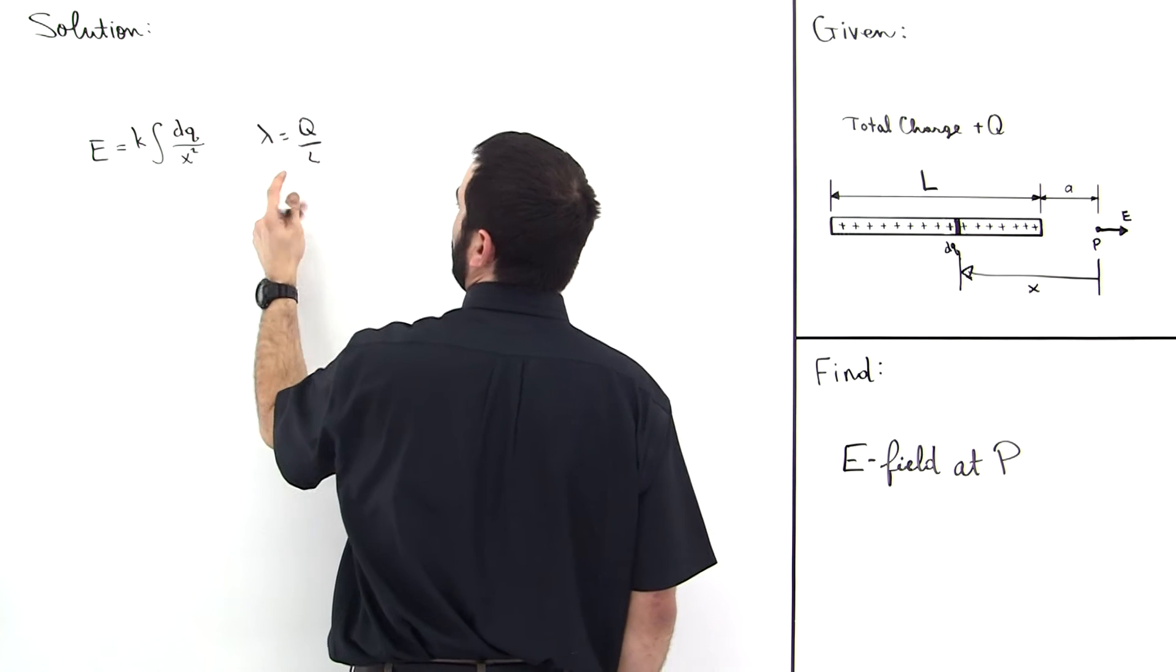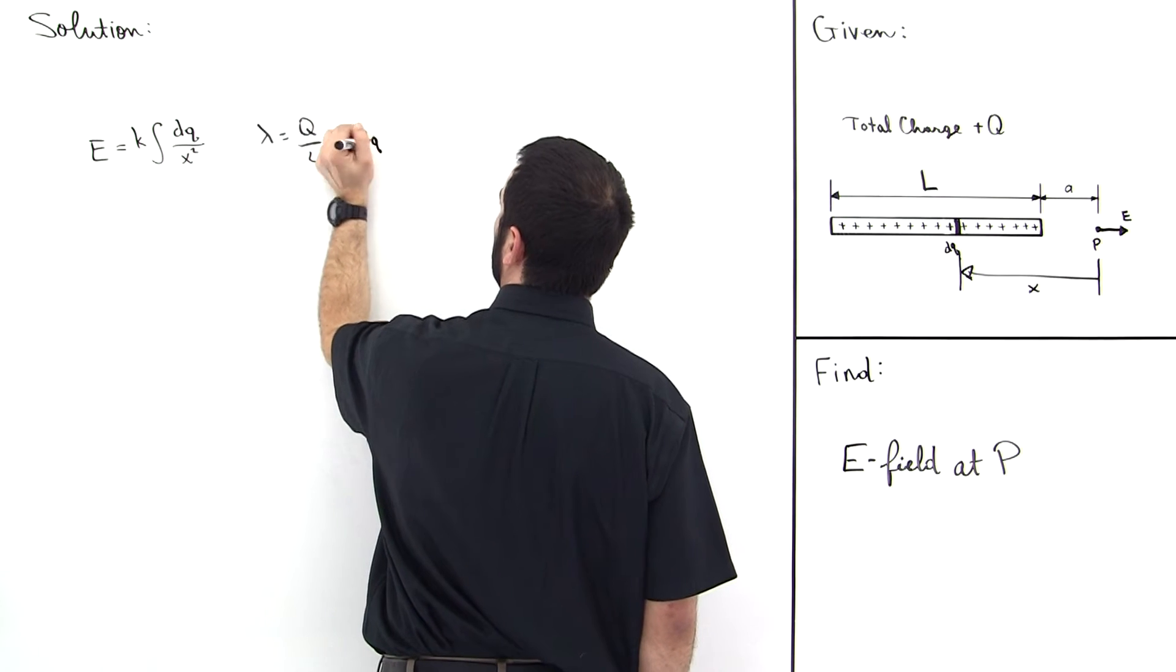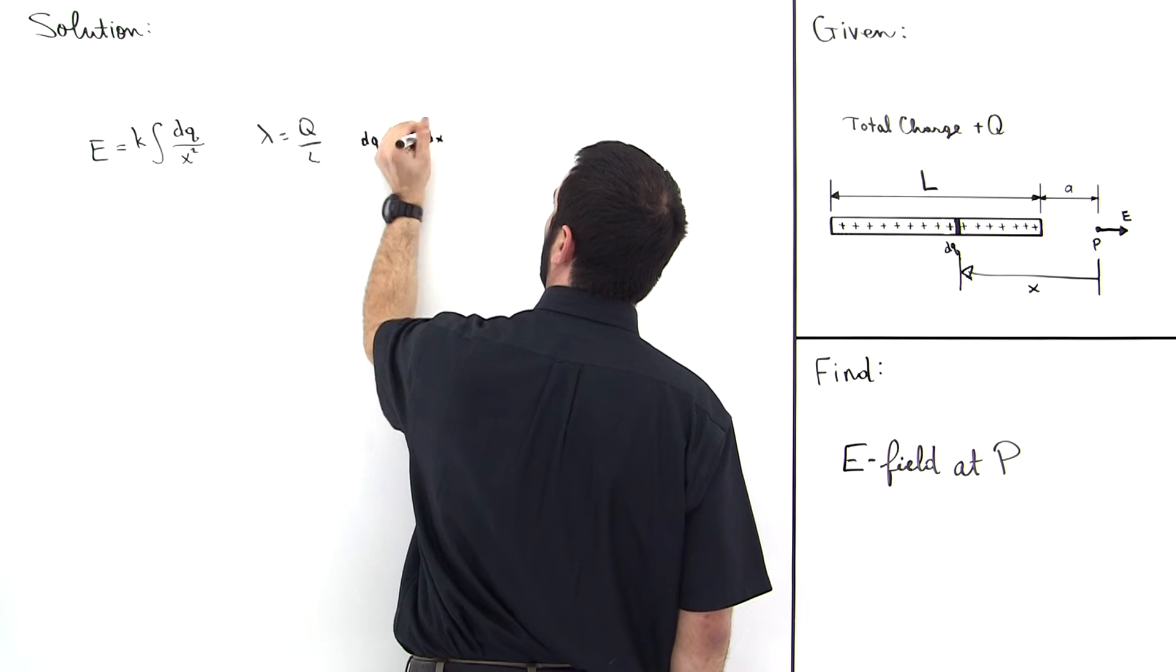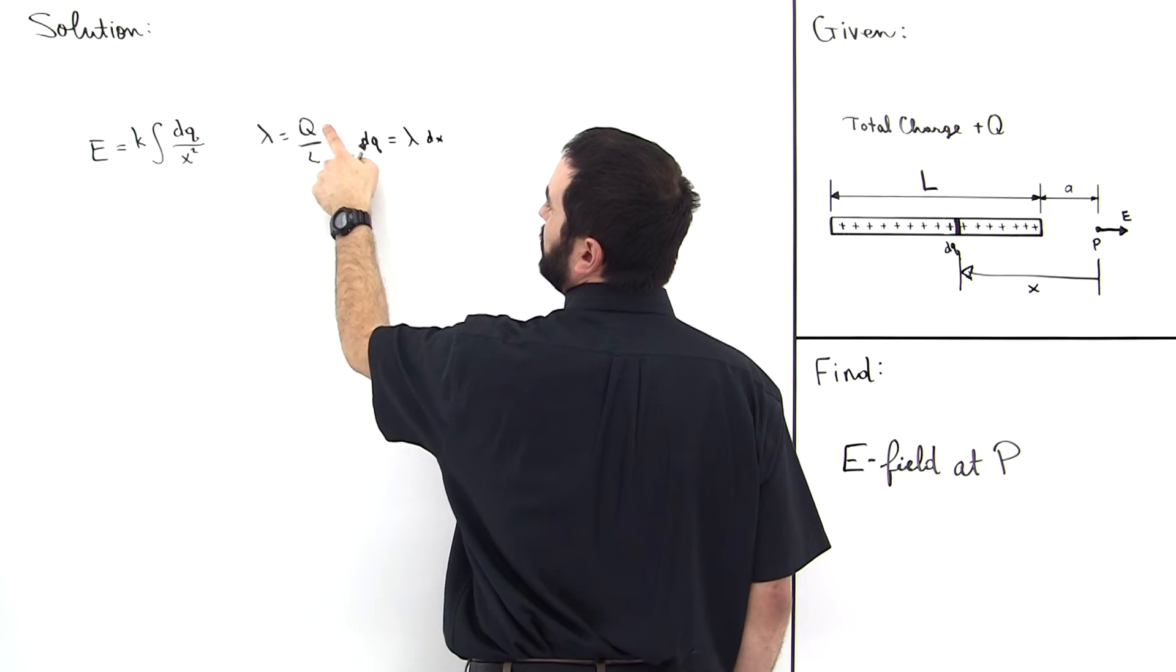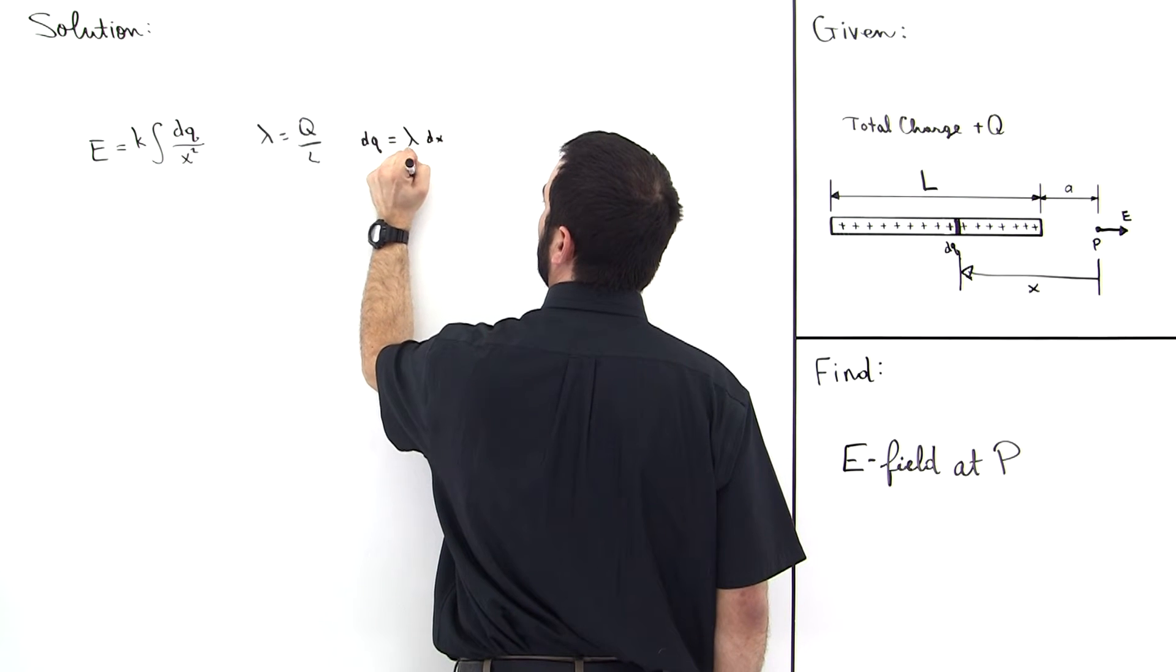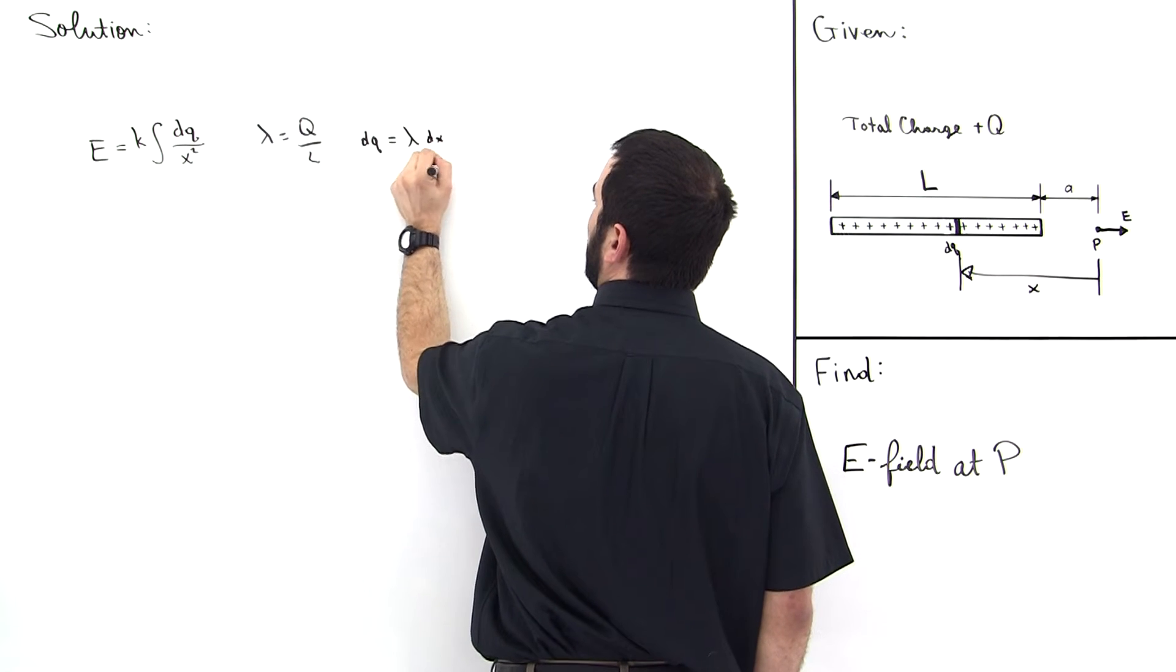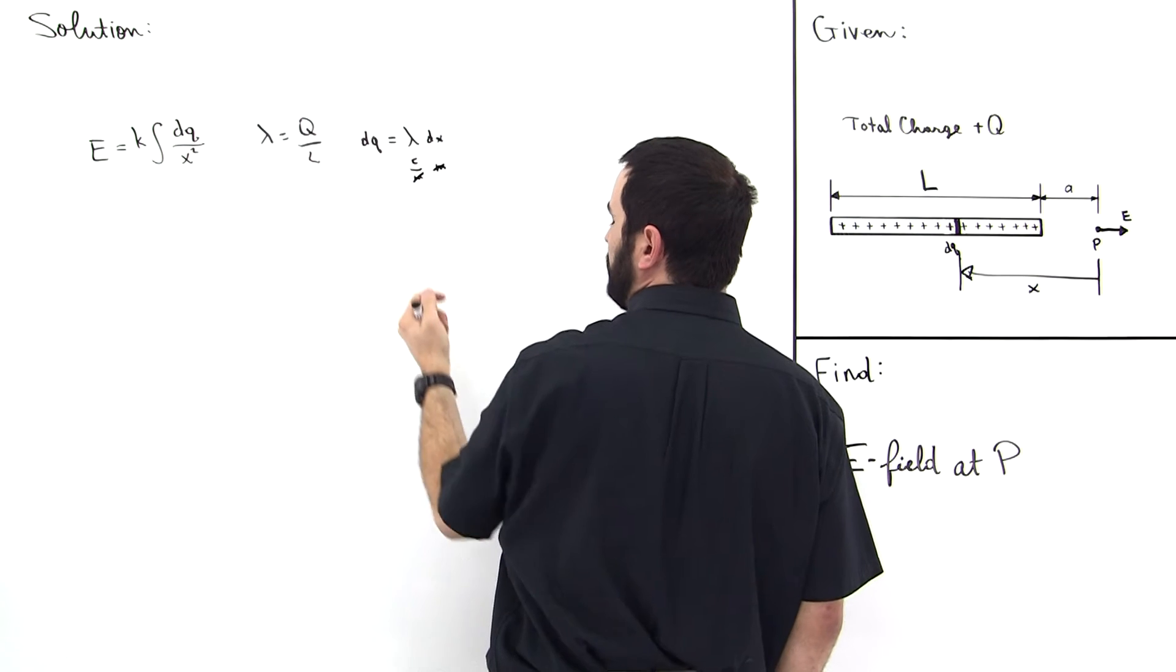Also, notice that once we've defined this, then dQ, a small amount of charge, is just going to be equal to Lambda times dX. Because notice, the units of Lambda are coulombs per meter, the units of dX are meters, and so we see the meters canceling to give coulombs, which is what we expect for charge. This makes sense.